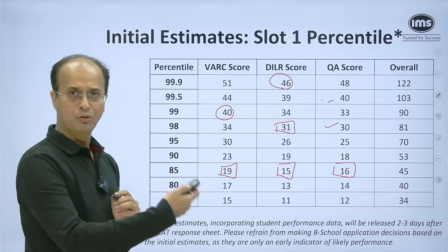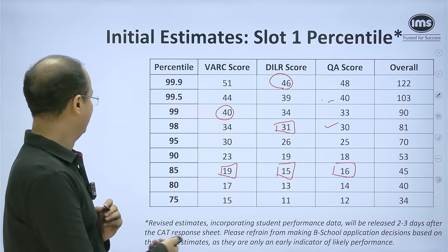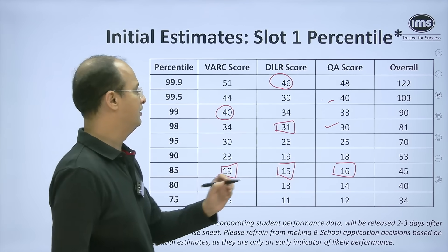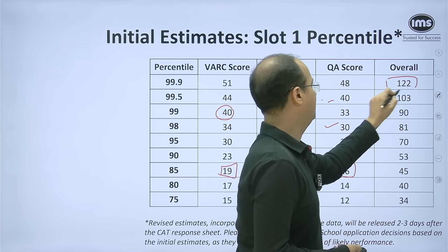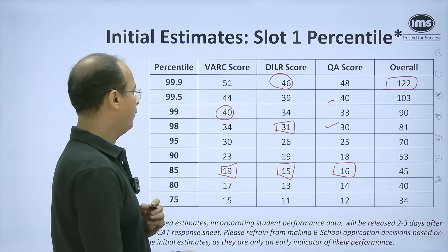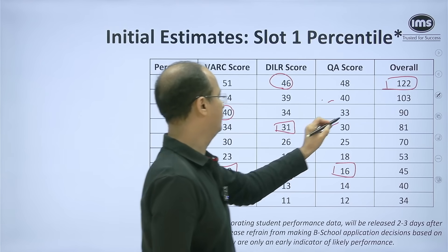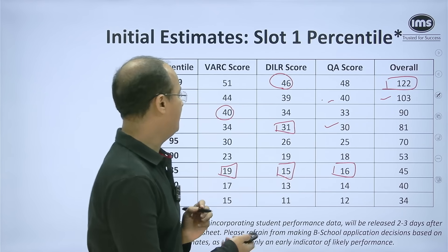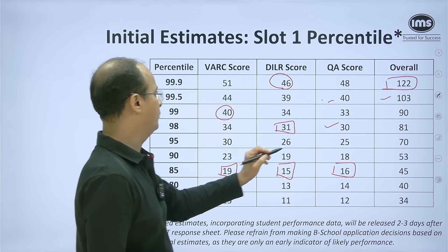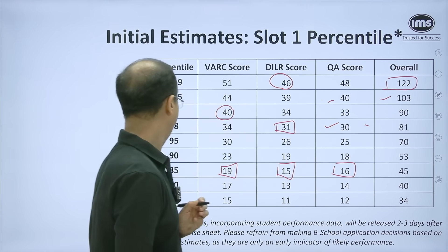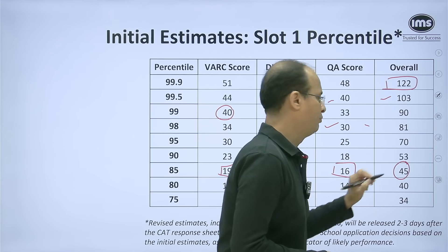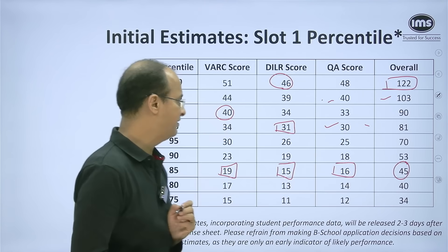For the overall numbers, the score required to cross the coveted 99.9 percentile mark — we think it will be 122. A score of about 100 will get you the 99.5 percentile mark, and a score of about 90 will get you the 99th percentile. For the 85th percentile mark, a score of 45 should suffice.